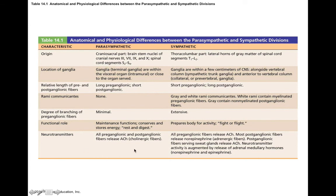In terms of neurotransmitters, the parasympathetic nervous system only uses acetylcholine. The sympathetic nervous system very rarely releases acetylcholine — for example, for sweat glands. For the most part, only the pre-ganglionic neurons release acetylcholine, and the post-ganglionic neurons release norepinephrine, which is an example of a catecholamine.